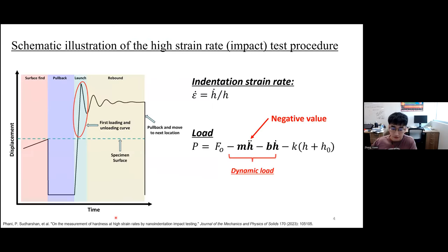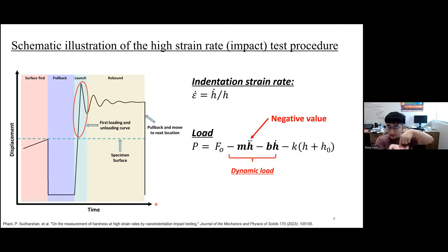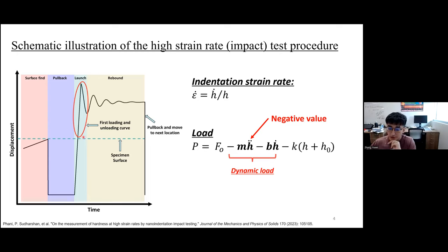This figure shows the displacement-time curve of the high strain rate testing procedure. Initially, the indenter engages to find the sample surface — this procedure involves elastic deformation — then we pull the indenter back into the air. After the indenter settles in the air, we launch it to the sample surface. The red curve represents the first loading and unloading. After the indenter settles on the indentation crater, we pull it back and move to the next location. The whole procedure takes about 10 seconds.